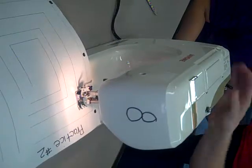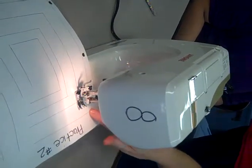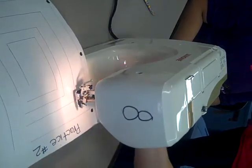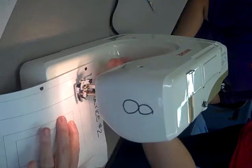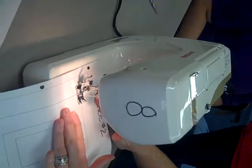When it gets that way, make sure the needle is in the down position. Take the presser foot lifter, lift it, and then remember from the video how she said to turn and pivot your paper, put it back down, and then you're going to sew again.